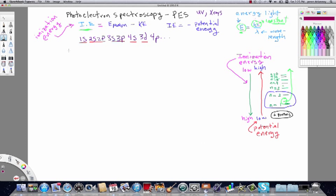it ionizes preferentially out of the 4S subshell and the PES is actually giving us a way of wrapping our minds around that.